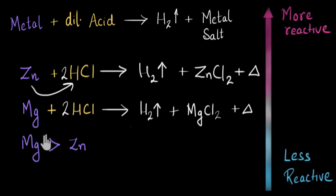Now we can carry out similar experiments for different metals like aluminum, iron and copper and rank all of them in a particular series.